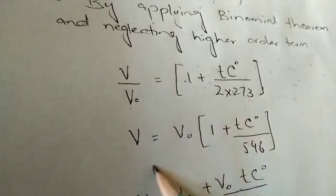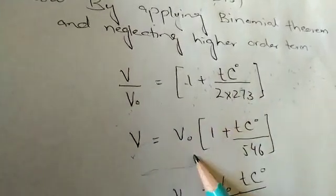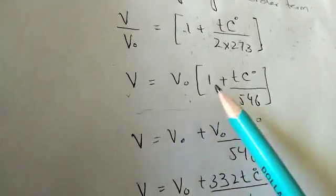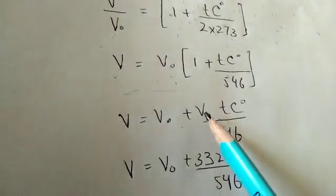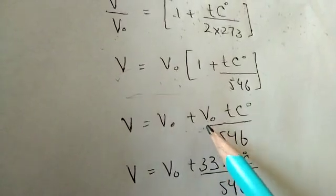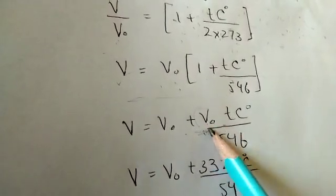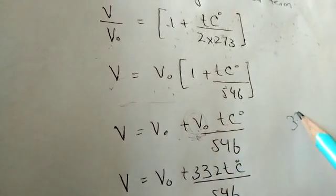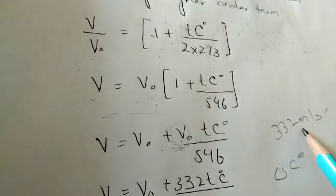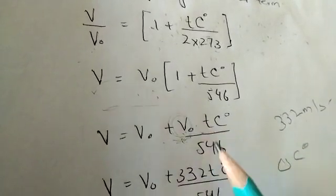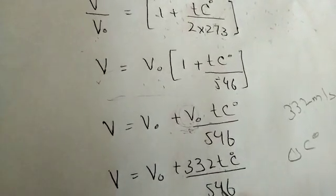After applying the binomial theorem, multiplying 2 by 273 gives 546. So V equals V0 times (1 plus T_centigrade divided by 546). According to Newton's formula with Laplace correction, the speed of sound V0 at 0°C is 332 meters per second. Substituting V0 equals 332, we get V equals 332 times (1 plus T_centigrade over 546).